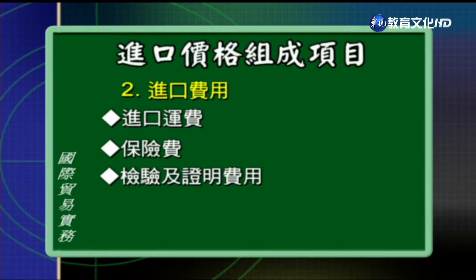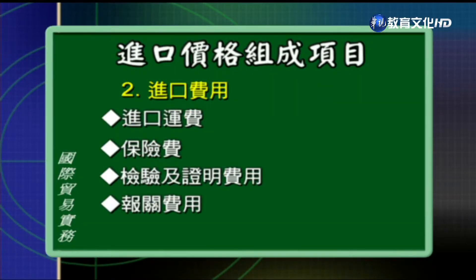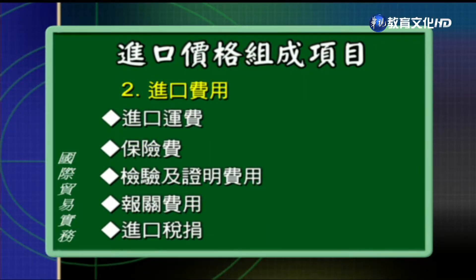第三个是检验及证明的费用，例如检验、检疫的费用，还有主管机关的许可或者是证明文件的申请费用，这些要加进我们的进口费用里面。第四个是报关费用，它是指报关期间所发生的费用，像是仓租还有报关行的报关手续费。第五项是进口税捐，进口的货物要课征进口关税，除了进口关税之外，海关也代为课征很多的规费，像是推广贸易服务费、商港服务费，以及货物税、营业税等等的税捐，在估算进口成本的时候应该要把它加进来。